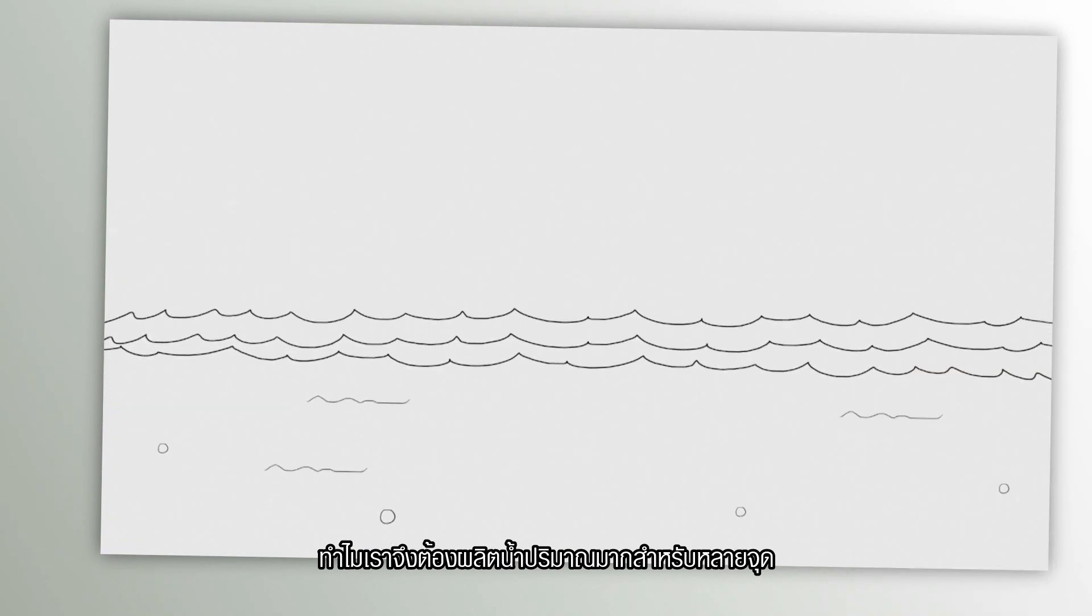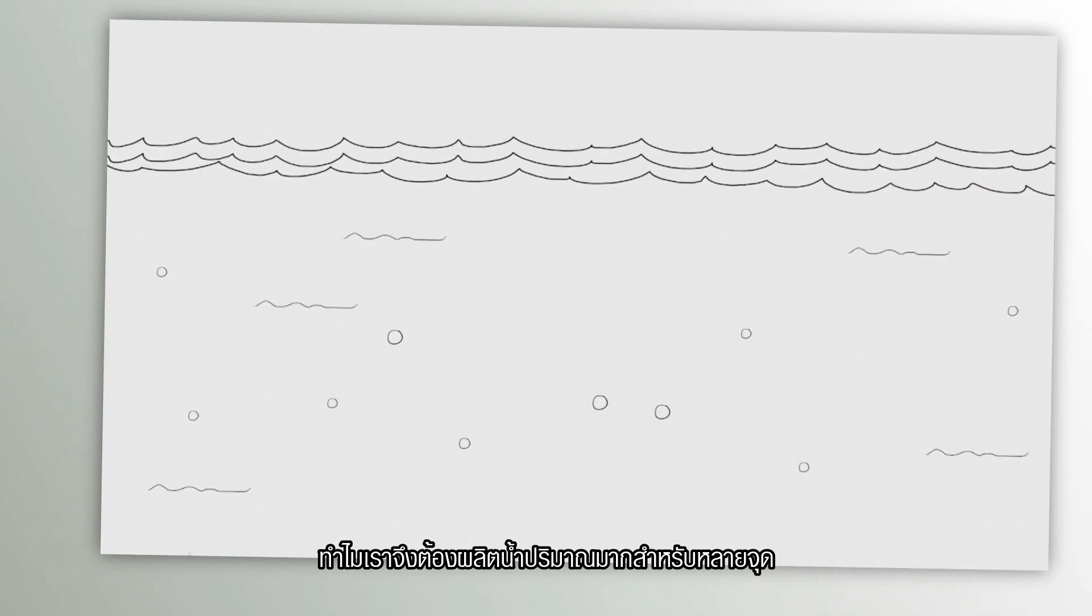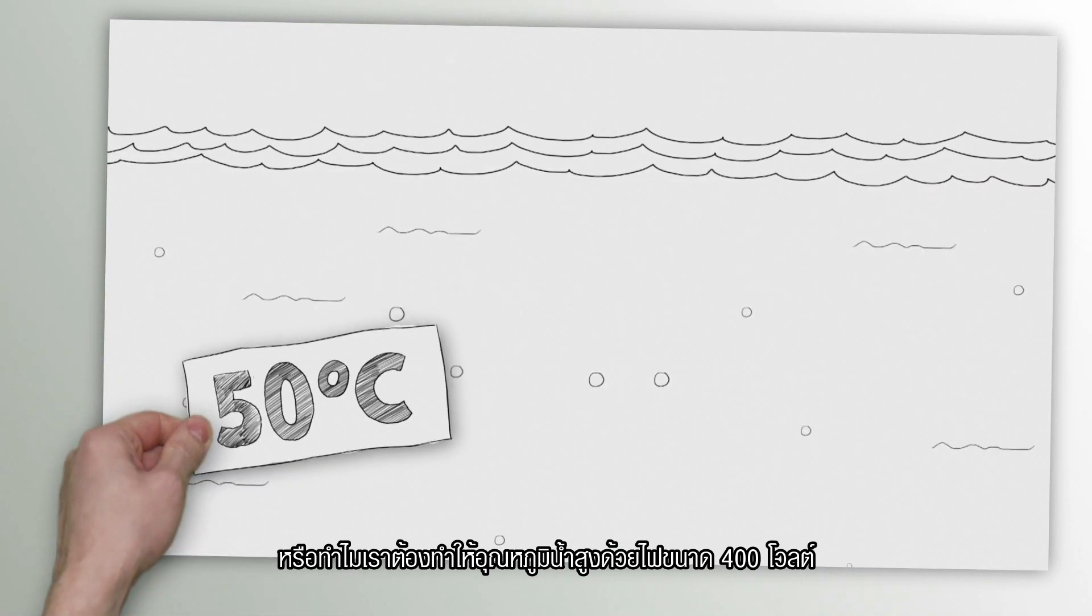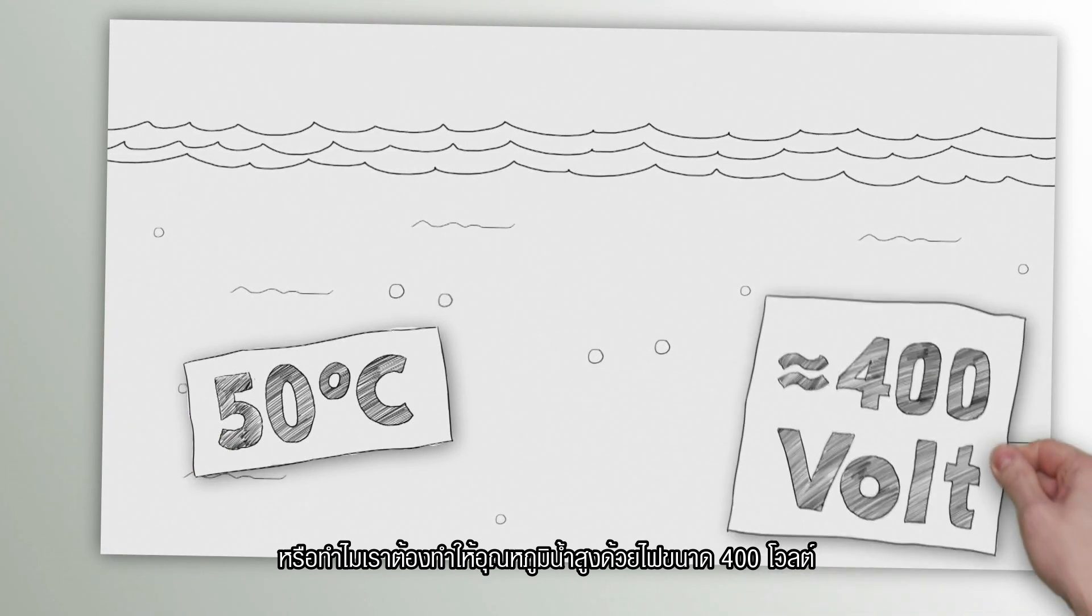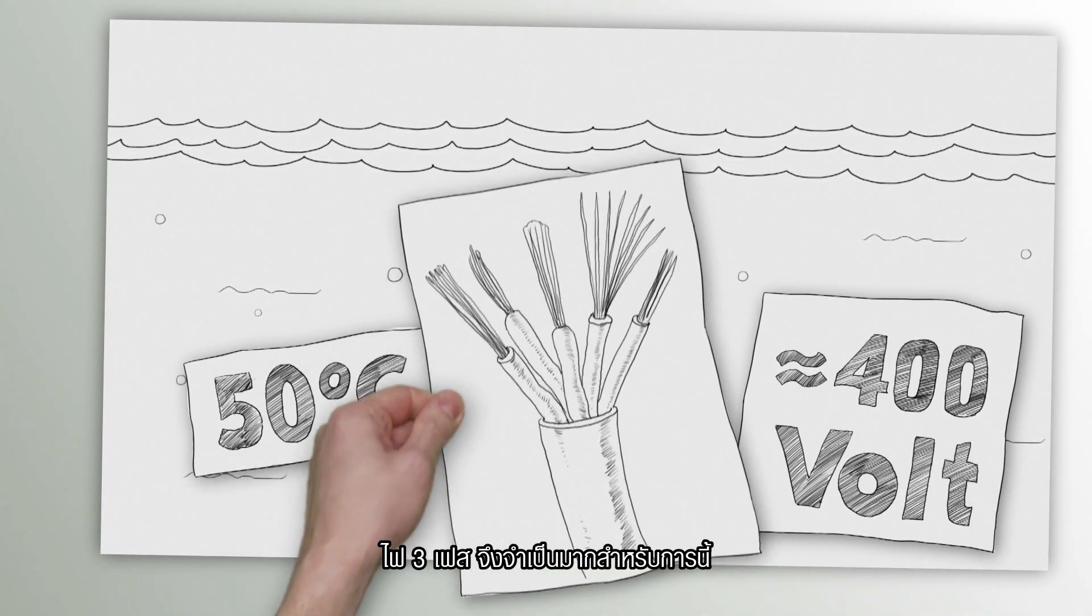This is logical and explains why when they have to produce large amounts of water, supply several draw-off points or reach very high water temperatures they run on 400 volts. Here three phase power is absolutely necessary.